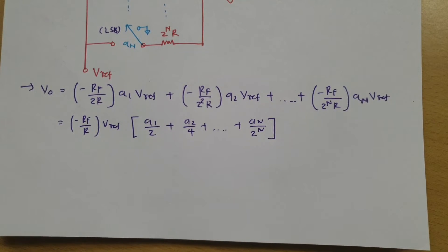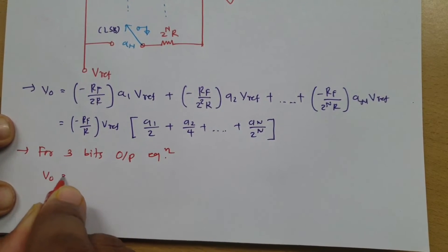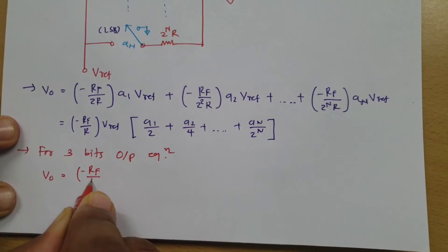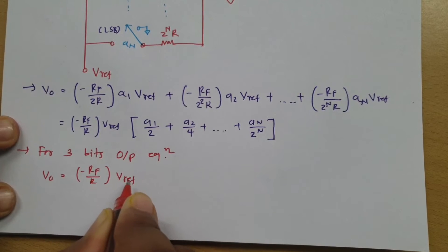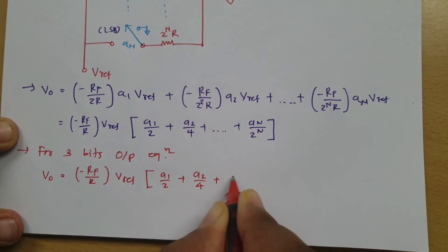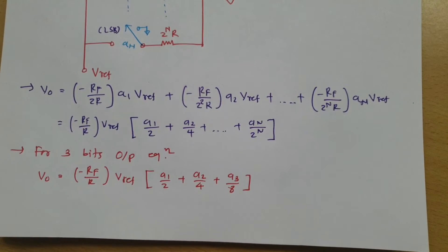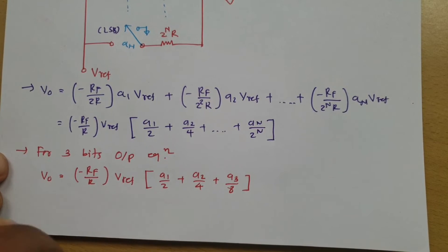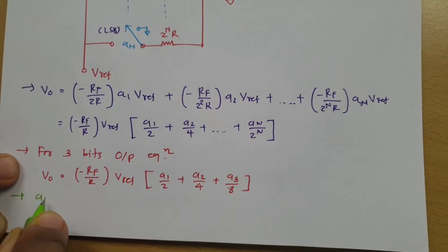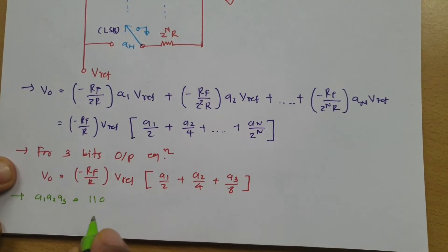To understand this properly, consider a practical case of 3 bits. For 3 bits, the output equation becomes: V0 = −(RF/R) × V_reference × (A1/2 + A2/4 + A3/8). For example, if switch data A1, A2, A3 is 1, 1, 0, what will be the output?